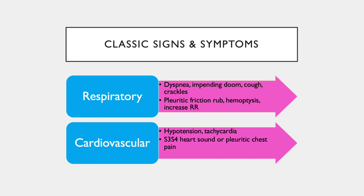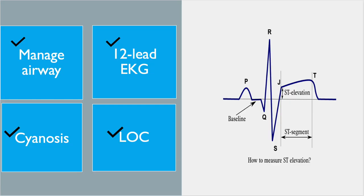Within the cardiovascular system, it can present with hypotension (low blood pressure), tachycardia (increased heart rate), presence of an S3 or S4 heart sound, or pleuritic chest pain, which is that sharp stabbing pain on inspiration. If your patient is presenting with any of these symptoms, always make sure to manage the airway, support the patient with supplemental oxygen, evaluate for cyanosis and level of consciousness, and get a 12-lead EKG to monitor for T-wave inversion or ST elevation.